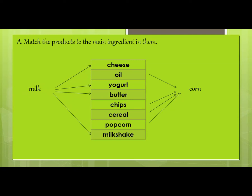Corn oil is used in cooking. The third one is yogurt — dahi — and yogurt is made by heating milk to a temperature, and microorganisms turn the milk into yogurt. The fourth one is butter, which is made with milk. Chips, cereal, and popcorn are all made from corn.